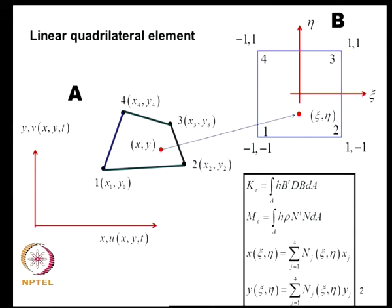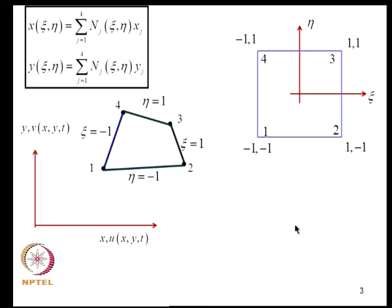To quickly recall, one of the elements we developed was a linear quadrilateral element. We mapped this to a unit square to evaluate integrals, representing coordinates X and Y in terms of new coordinates XI and ETA using the same trial functions used to represent field variables. This formulation is known as isoparametric formulation. We showed that edges of the master element correspond to edges of the quadrilateral element, and discussed evaluation of stiffness and mass matrices.